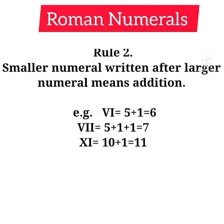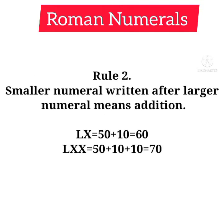Rule number two: a smaller numeral written after a larger numeral means addition. If we write a smaller numeral after a larger numeral, we have to do addition. For example, VI — V stands for five and I stands for one, so five plus one equals six. Similarly, VII equals seven, and XI — X stands for ten and I stands for one, so ten plus one equals eleven.